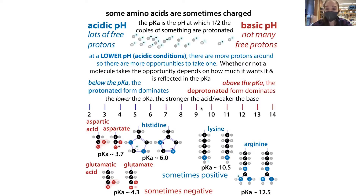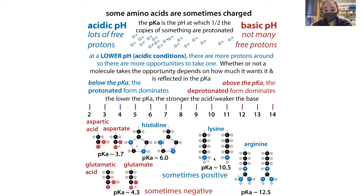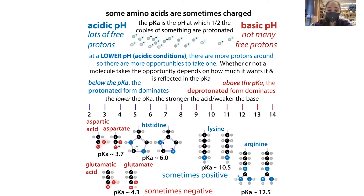Inside a cell these amino acids are mostly found in their positively charged form because we are always looking to the left of their pKa — meaning there are more protons available than they need to remain mostly protonated. The differences in pKa do have functional consequences, especially when talking about enzymes using these residues.